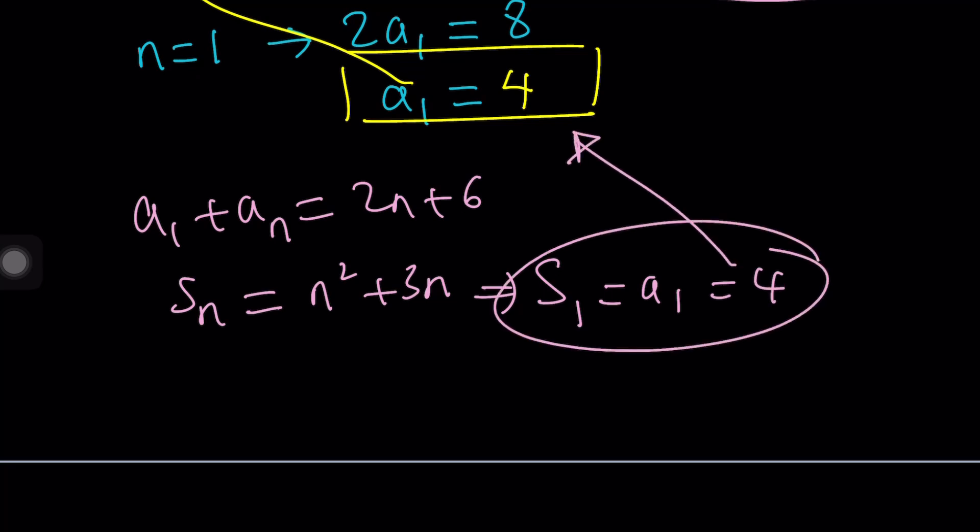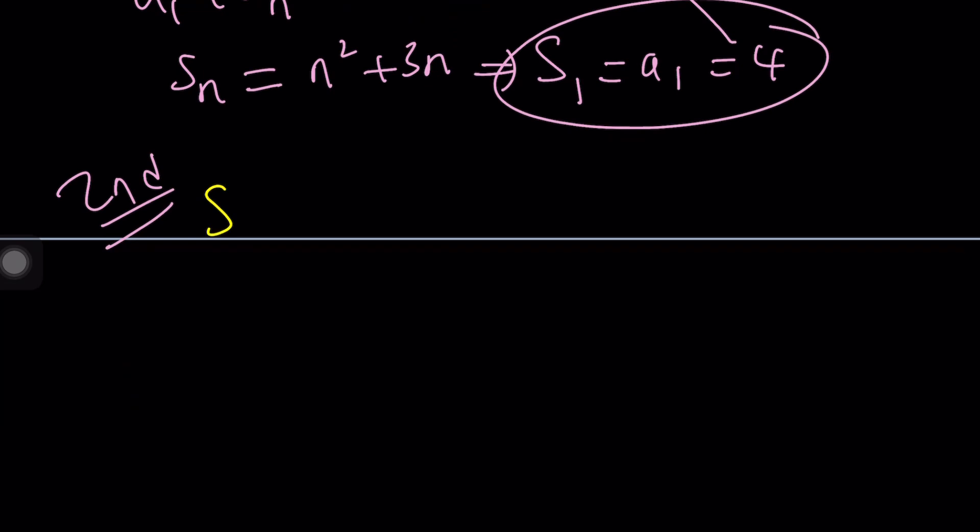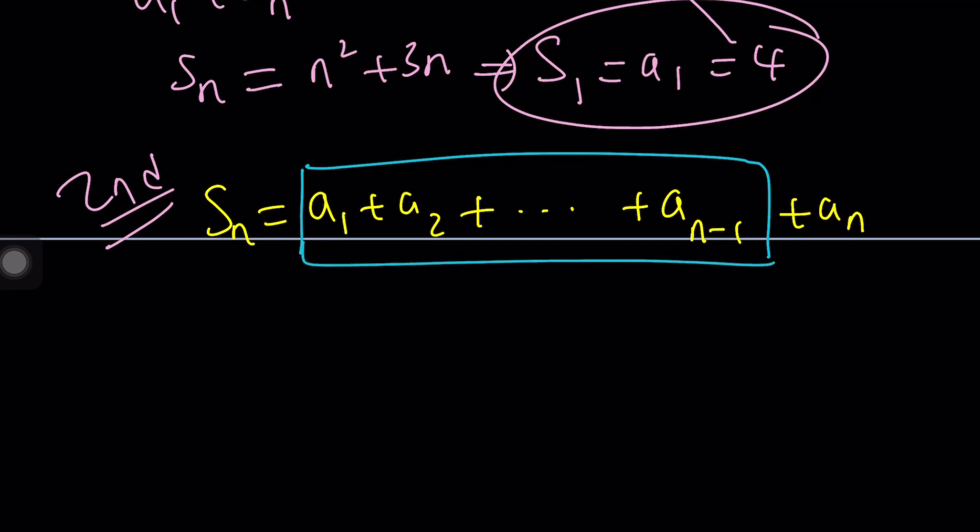Now, let's go ahead and talk about the second method real quick because it's real quick. So let's go ahead and expand a sub n, a sub 1, a sub 2, dot, dot, dot. Now, this is going to go all the way up to a sub n, but there is another term before that, which is a sub n minus 1, right? Now, this is helpful because if you consider the sum of the first n minus 1 terms, it is called s sub n minus 1. So we get a formula.